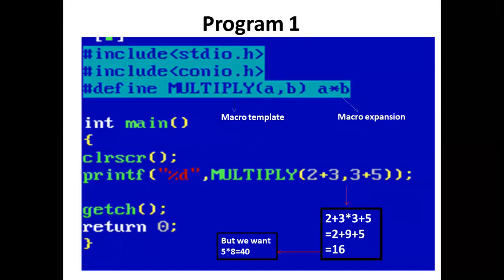Whenever we write MULTIPLY(a,b), it will be replaced by a*b. In the main function, the printf statement prints MULTIPLY(2+3, 3+5).